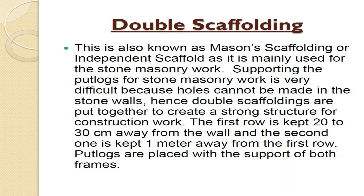Double scaffolding is also known as mason scaffolding or independent scaffold, as it is mainly used for stone masonry work. Supporting the putlogs for stone masonry is very difficult because holes cannot be made in stone walls. Hence, double scaffolding is put together to create a strong structure for construction. The first row is kept 20 to 30 centimeters away from the wall, and the second row is kept 1 meter away from the first. Putlogs are placed with the support of both frames.